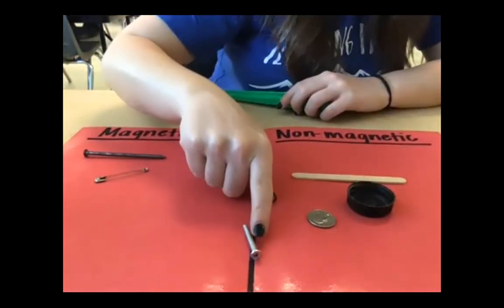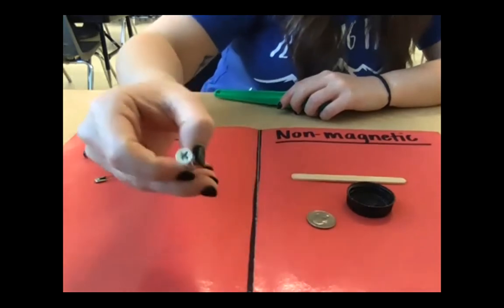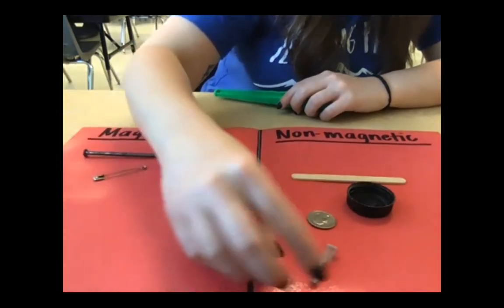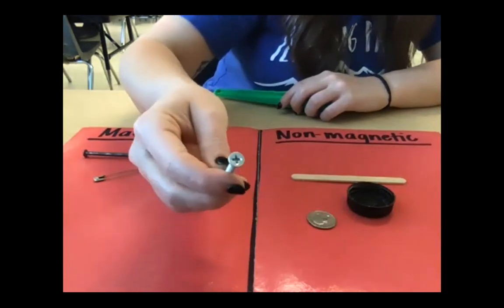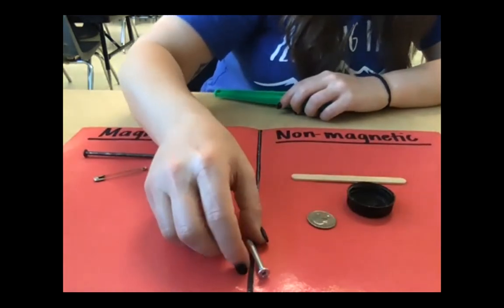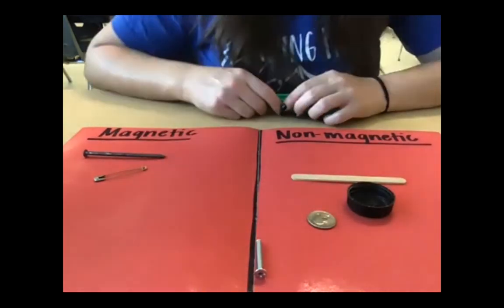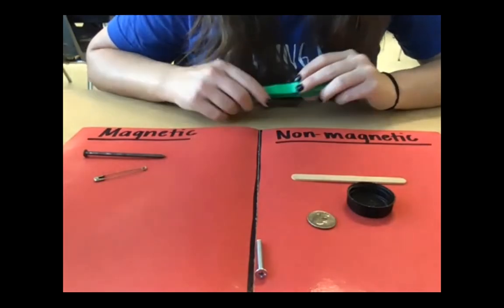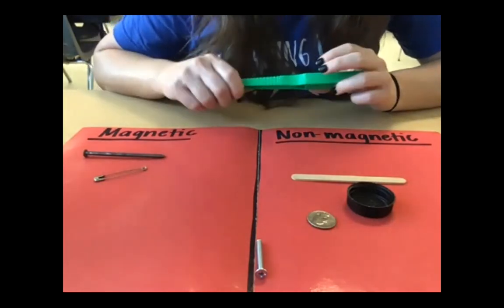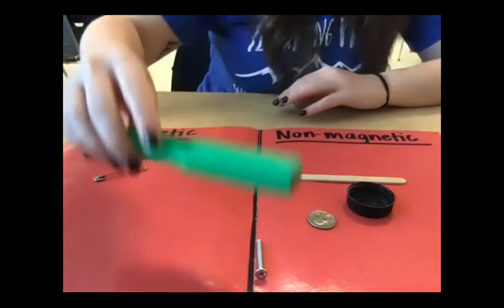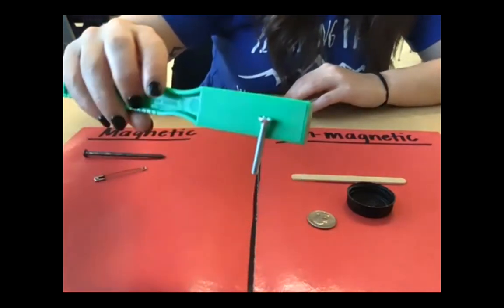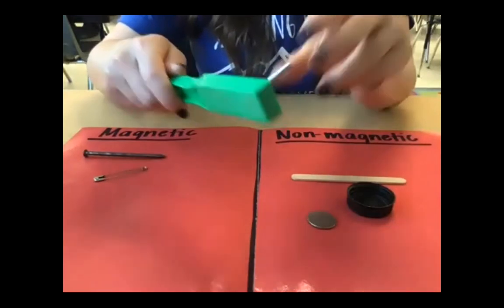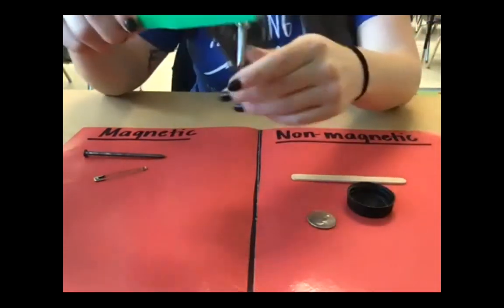Here I have a screw, like you would use to put in your wall to hang pictures or to build something. I saw in the PowerPoint that screws are magnetic, so I think it will stick to my magnet. And there we go — it does stick to my magnet, so I know that it is magnetic.